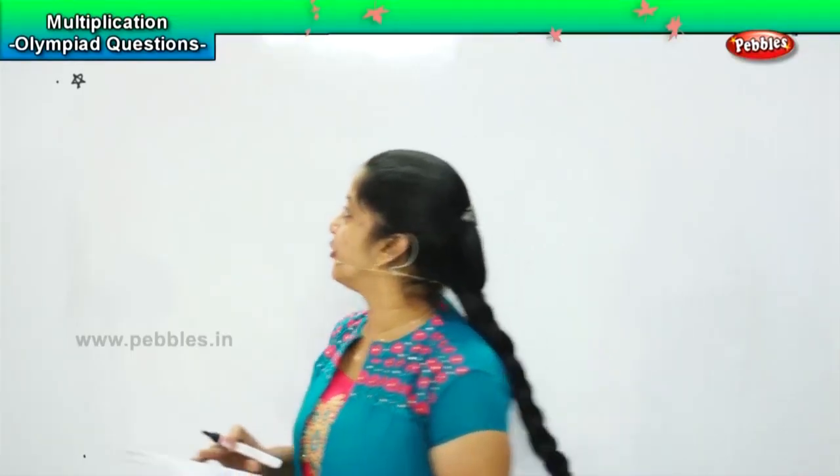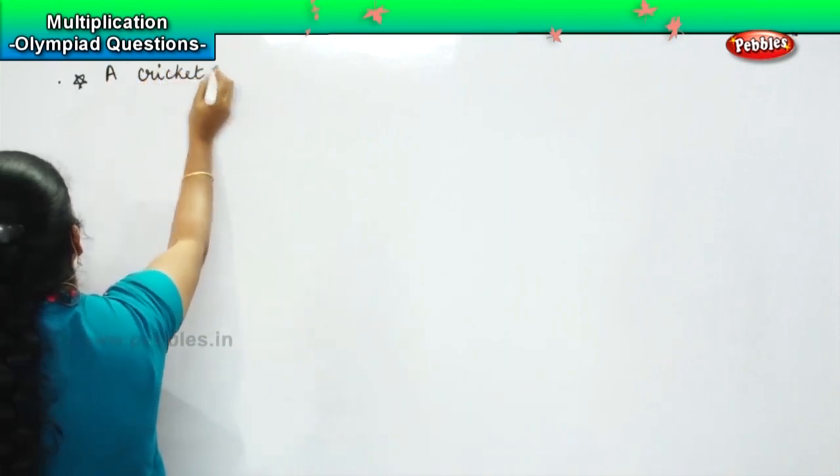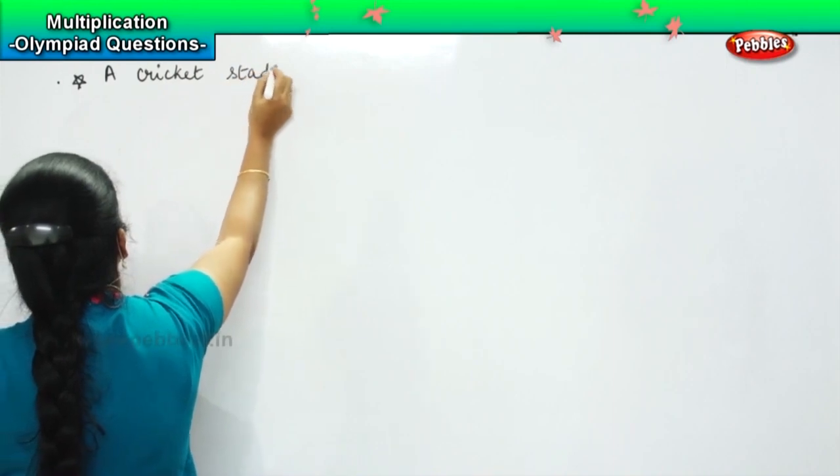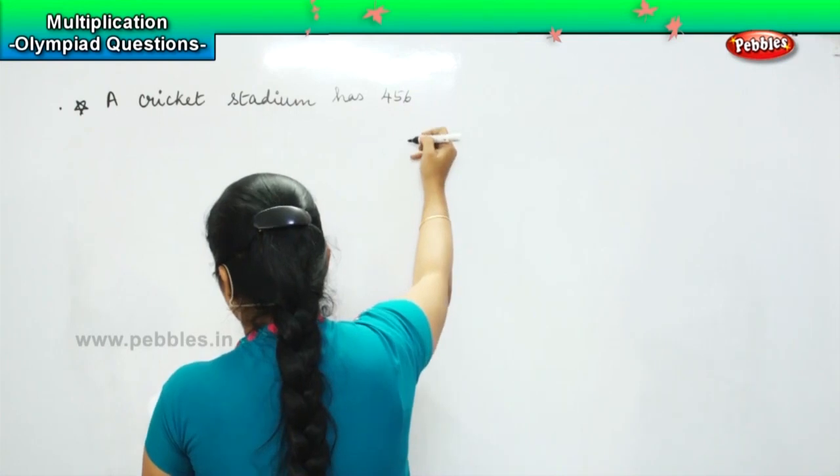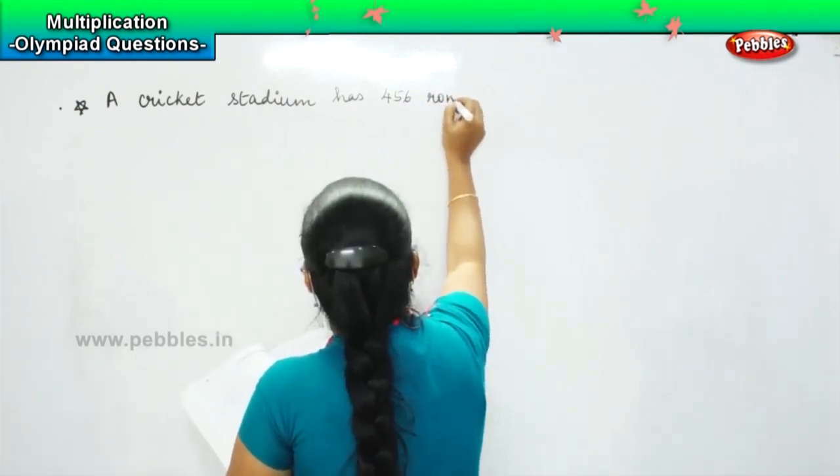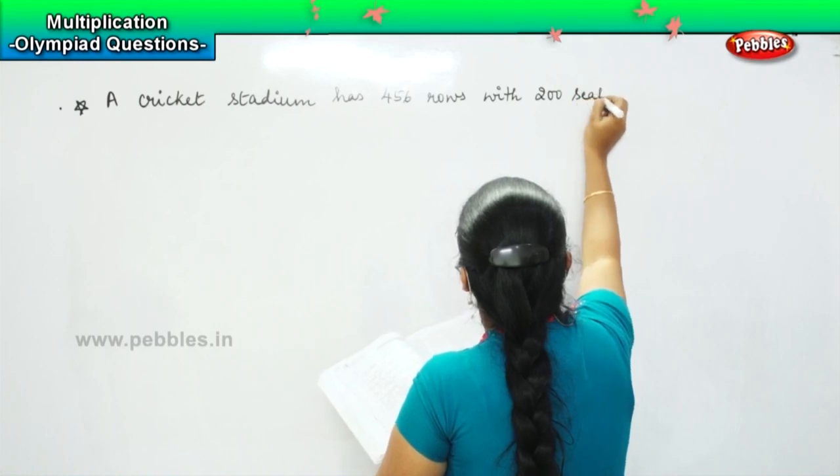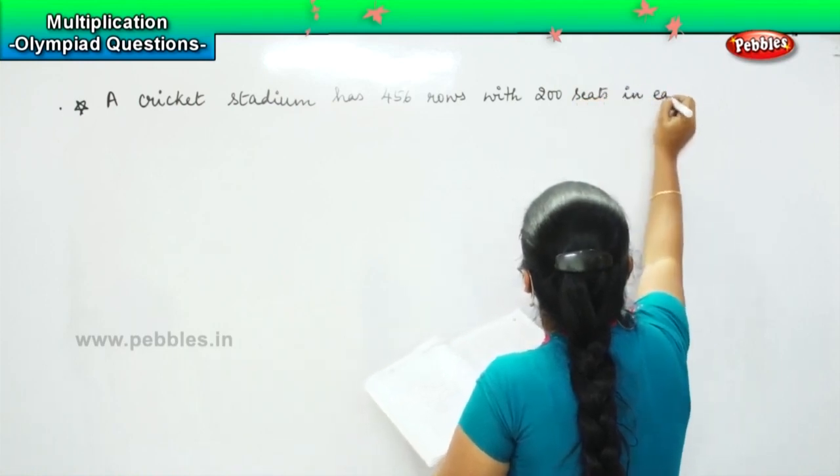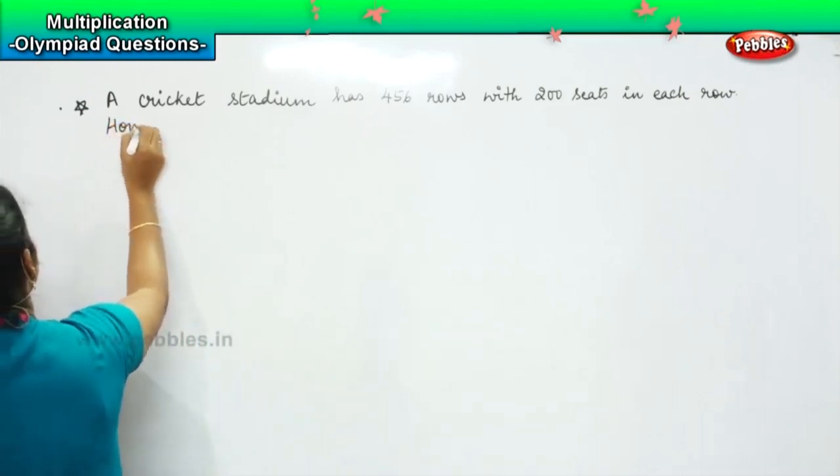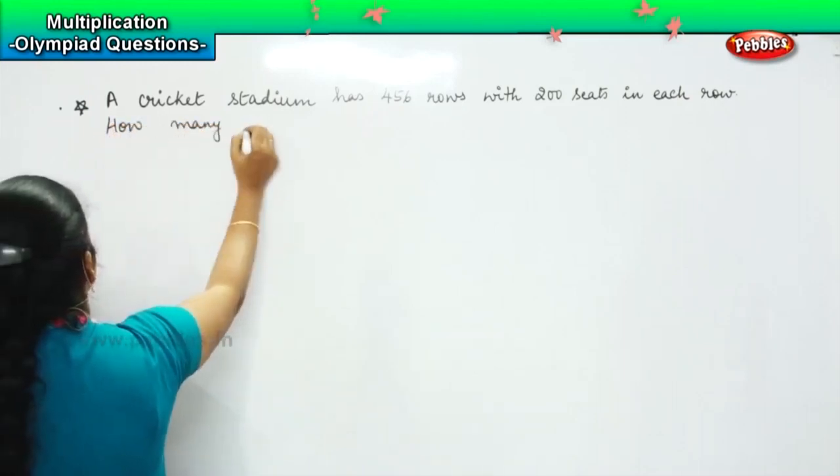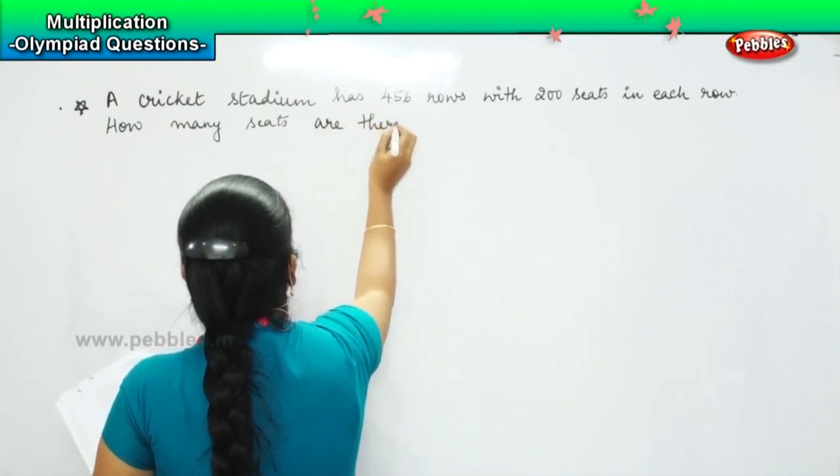The next question for you is: a cricket stadium has 456 rows with 200 seats. How many seats are there in the stadium?